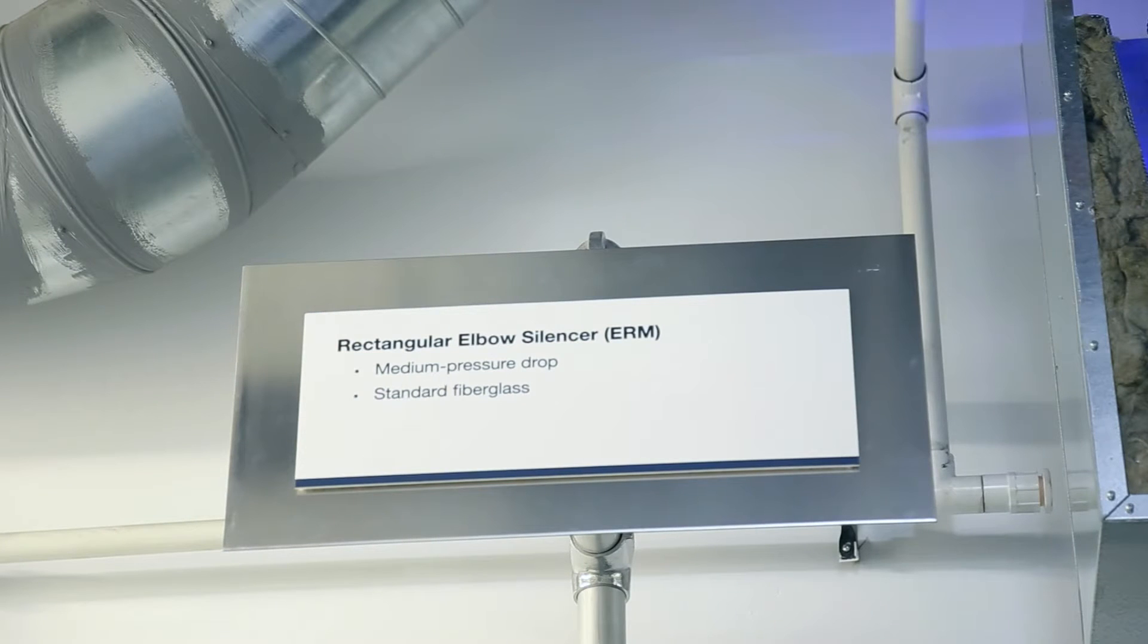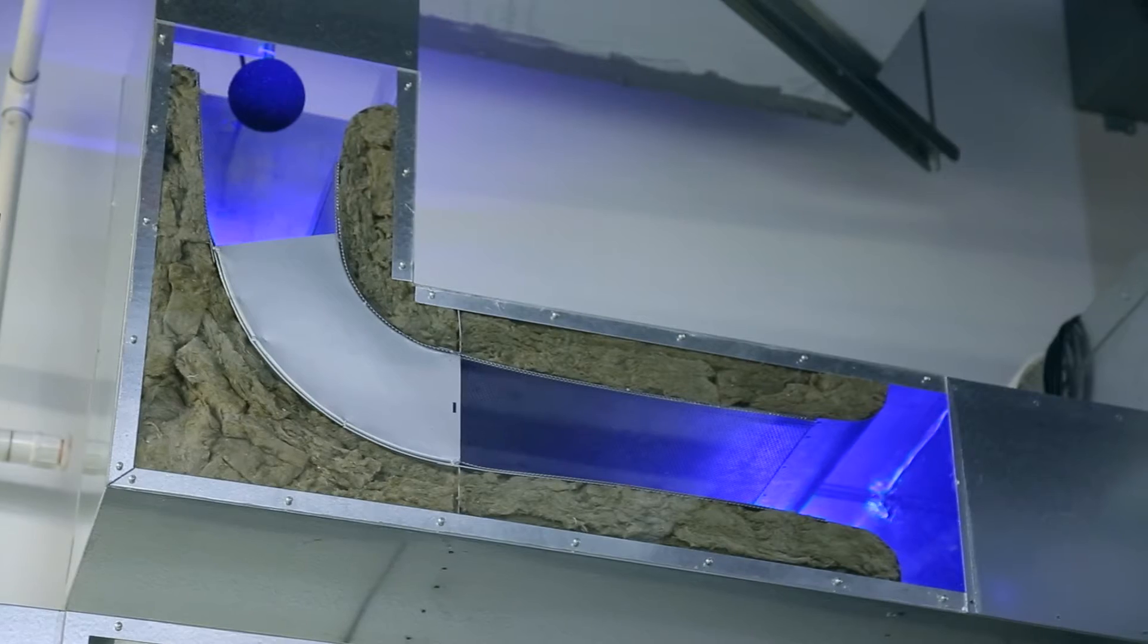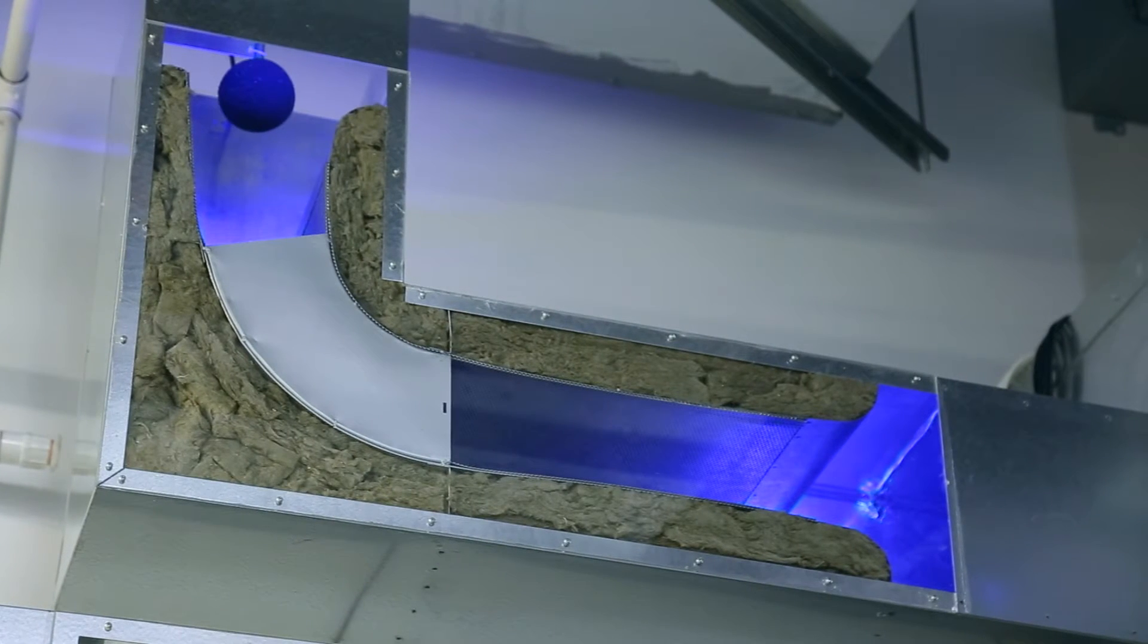Next we will close the damper for the empty duct and open the elbow ERM silencer at the top of our system. We'll run the sound measurement through the elbow.